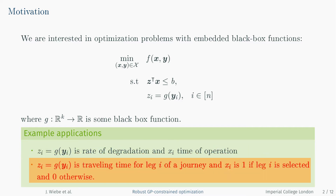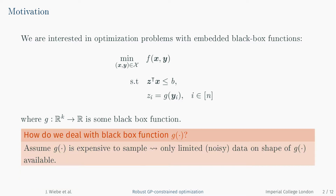Another example is optimal vehicle routing, where the black box function may model travel time for leg i of a journey, and xi is a binary indicating whether this leg is selected to be part of the journey. The problem with black box functions is that they tend to be expensive to sample and samples can be noisy.